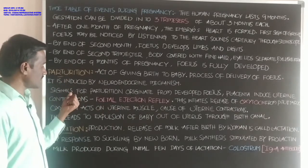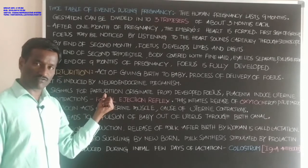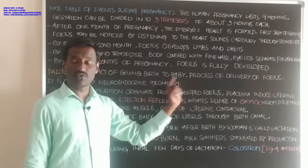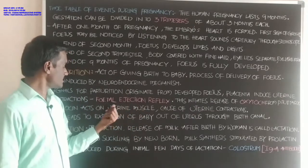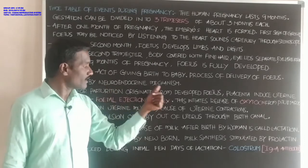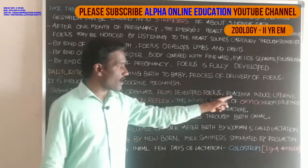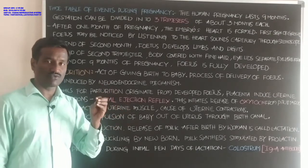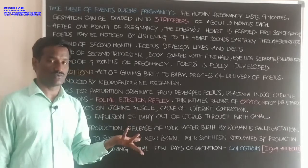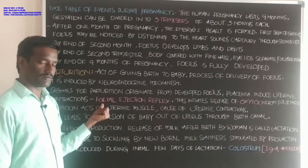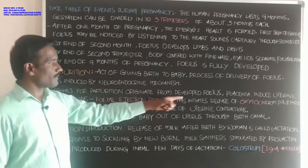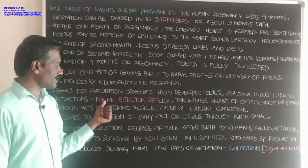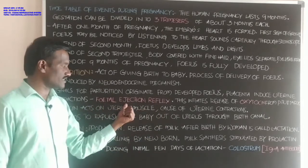Signals for parturition originate from the developed fetus and placenta, and induce uterine contractions. The uterine wall goes into contraction. The action by the developed fetus and placenta which induces uterine contractions is called the fetal ejection reflex.